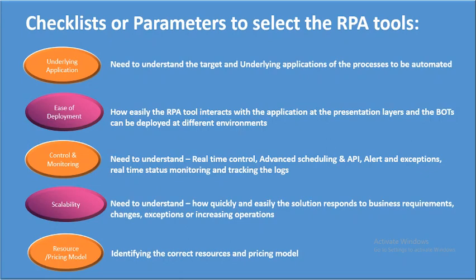The third parameter is control and monitoring. You need to know what real-time controls, advanced schedules, APIs, alerts, exception handling, real-time status monitoring, and log tracking the tool provides. You should evaluate which RPA tool best provides these capabilities so you can implement that tool in your process.